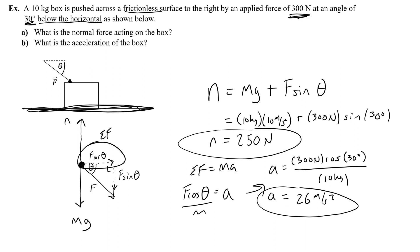Great job. This is the process for all problems with forces applied at angles — calculating normal forces and how they change depending on whether force is pushed below or above the horizontal, and finding acceleration from the cosine component of the force. Later we'll introduce friction and discuss situations where there is a friction force present, and how the box can slow down, speed up, or move with constant velocity.